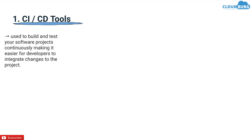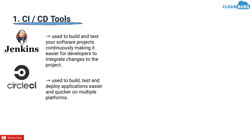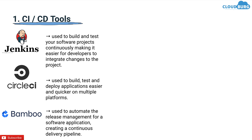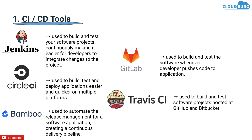The first category in the stack is CI-CD tools. There are many continuous integration and continuous delivery tools like Jenkins, which is used to build and test your software projects continuously, making it easier for developers to integrate changes to the project. CircleCI is used to build, test and deploy applications easier and quicker on multiple platforms. Bamboo is used to automate the release management of a software application, creating a continuous delivery pipeline. GitLab is used to build and test software whenever a developer pushes code to the application. Travis CI is used to build and test software projects hosted at GitHub and Bitbucket. The top demanding CI-CD tools are Jenkins and GitLab CI.